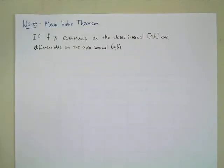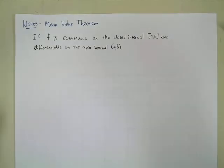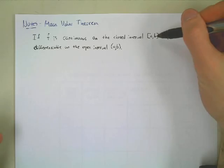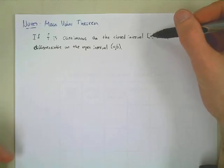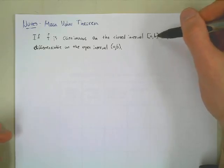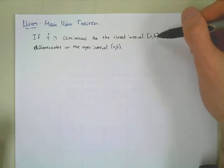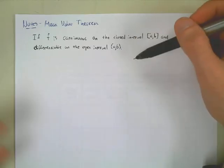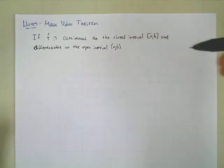The derivative is a limit, and in order for a limit to exist, we need to have a left-hand and a right-hand side. But at endpoints — for example, at the left endpoint A — we don't have a left-hand side because A is it. We can only approach from the right. The same thing for the right endpoint B. That's why we have to change it to the open interval, where we can approach either point from the left and from the right.